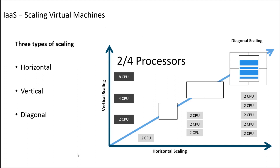Vertical scaling is scaling up, where we add resources. Horizontal is scaling out, as we would say. Diagonal scaling is basically a combination of both — this is hybrid scaling, where we not only add additional resources but also add additional nodes.